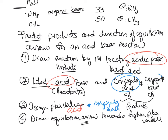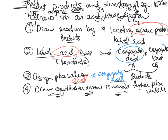Then draw the direction of the equilibrium arrow towards the higher pKa value. If the two pKa values on the acid and the conjugate acid are about equal, the arrow will be balanced. If it's higher on your product side, the equilibrium lies towards the products. If it's higher on the reactant side, the equilibrium lies towards the reactants.